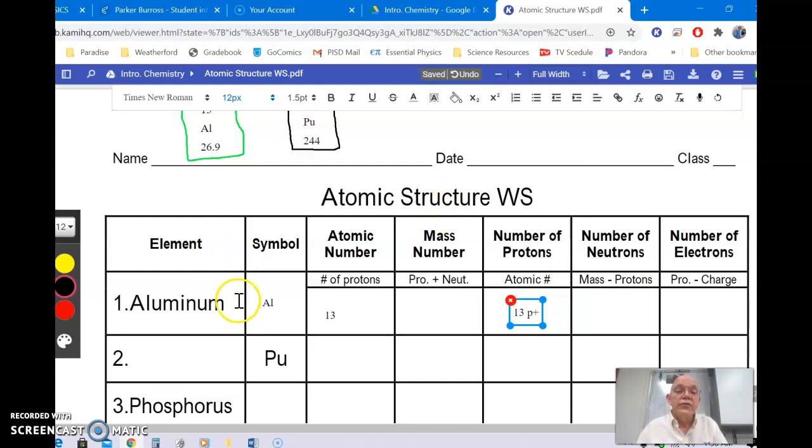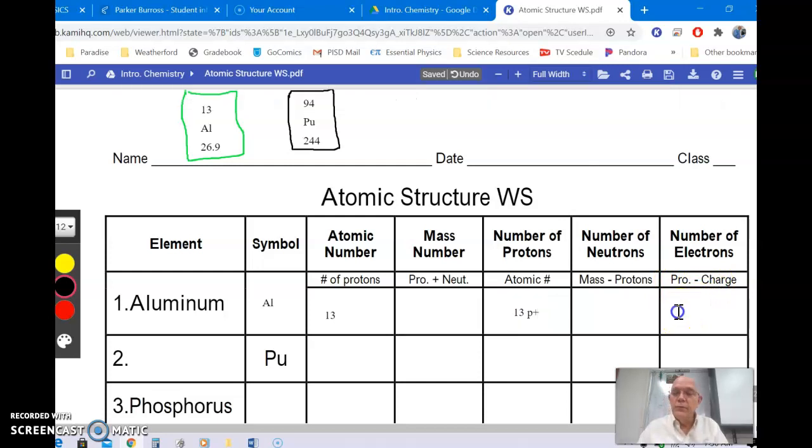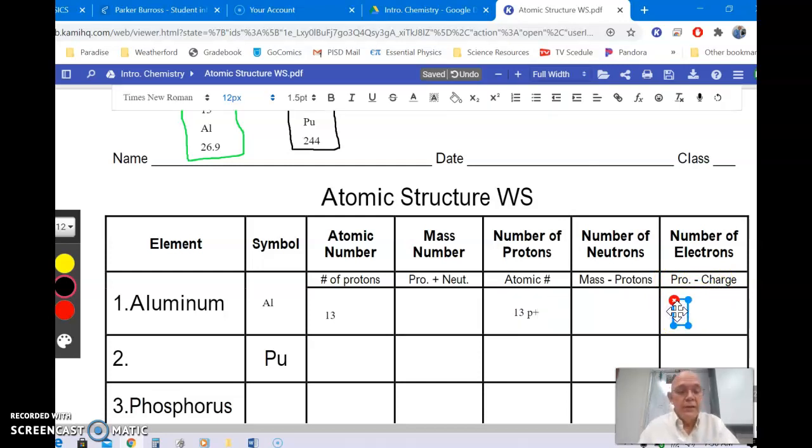Now, since this does not have a charge, it doesn't say plus one or minus one or anything like that, that means it is neutral. And so the electrons is the protons minus the charge. Well, 13 minus zero is going to give you, you guessed it, 13. So 13, but these are electrons, so we put E minus, that's the symbol for electron.